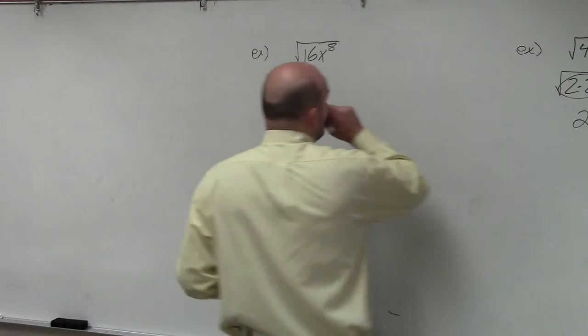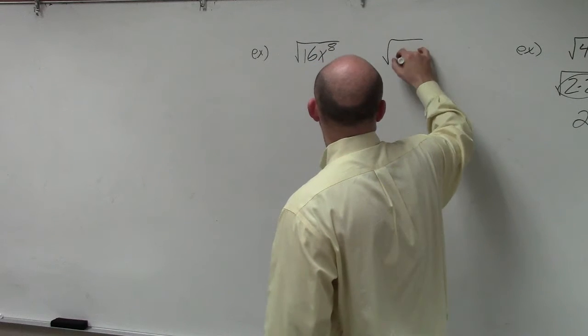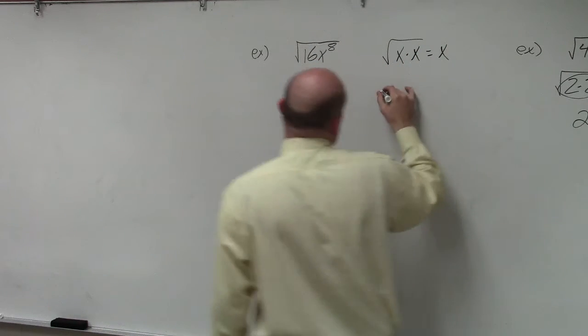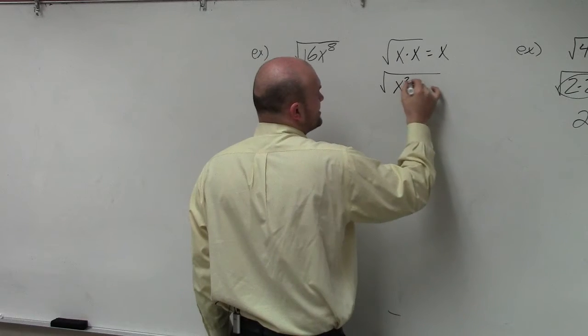So rather than looking at this and saying, all right, the square root of x times x we know is x, I'm going to look at this using the product rule, which is x squared.